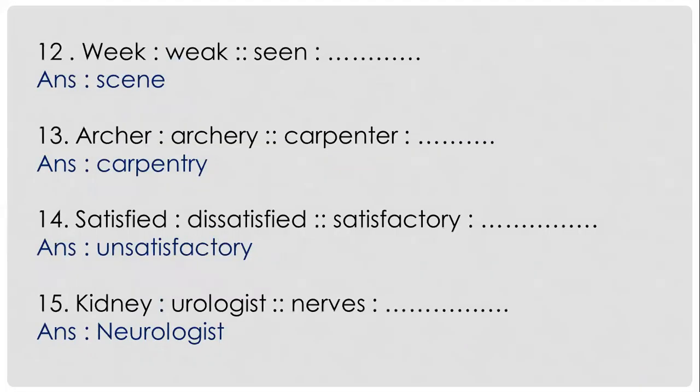Next: 'week' is to 'weak' as 'seen' is to dash. Again we have a homophone question. 'Week' — seven days in a week — and 'weak' (W-E-A-K) meaning feeling weakness, no energy. They sound the same but the spelling and meaning are different. Similarly, 'seen' — past form of 'see' — and its homophone is 'scene' (S-C-E-N-E). For example: 'A good scene was seen on a tour.' So 'week' is to 'weak' as 'seen' is to 'scene'.